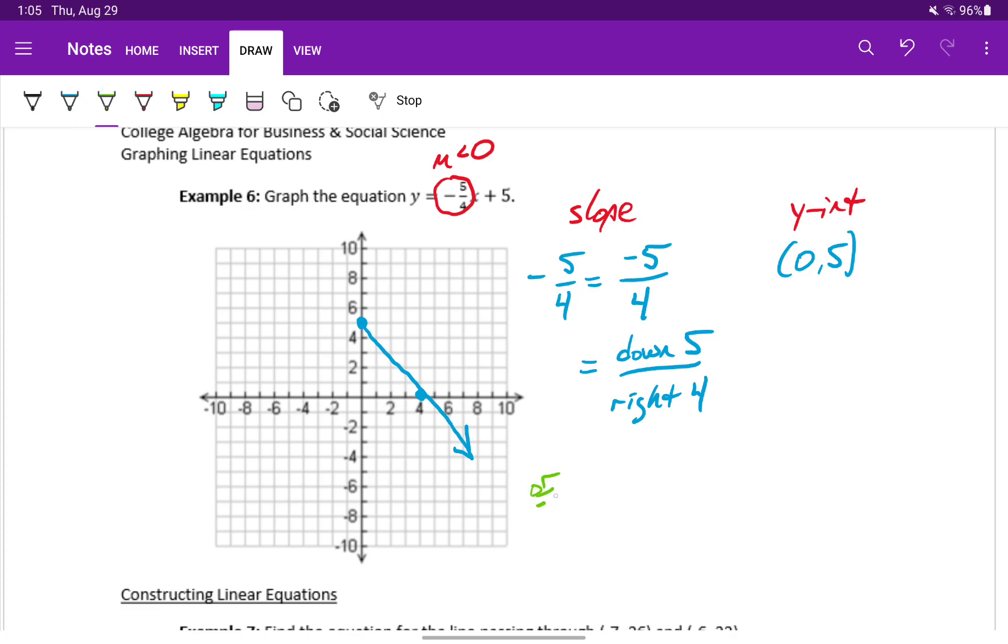Or, alternatively, we could consider negative 5 fourths equal to 5 over negative 4, in which case we would move up 5 units and to the left 4 units. So we would move up to 10 and to the left 4 units to negative 4, and we would find another point that falls along that same straight line pattern.